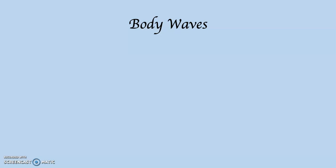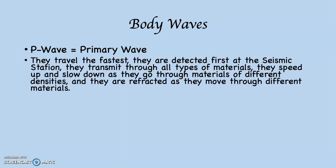There are two types of body waves. The first is the P wave, which is the primary wave. They travel the fastest and are detected first at the seismic station — a place with a seismogram, like Caltech in Pasadena, for example. The P waves transmit through all types of materials. They speed up and slow down as they go through materials of different densities, meaning as the wave moves from one layer to the next inside the planet: if the layer is denser, the velocity increases; if the layer is less dense, the velocity slows down.